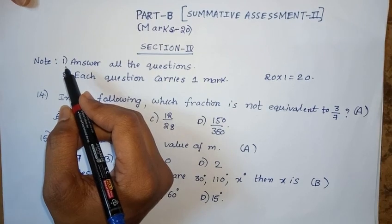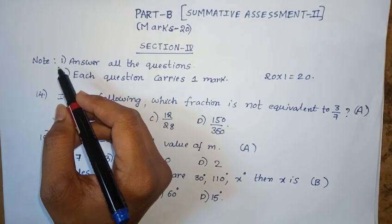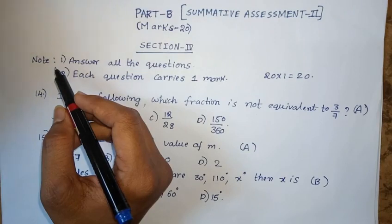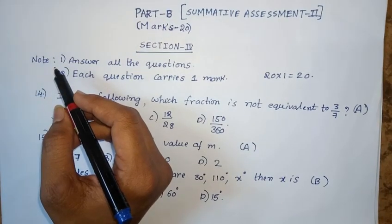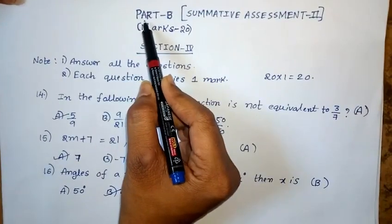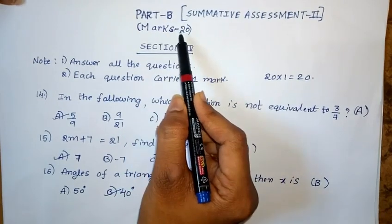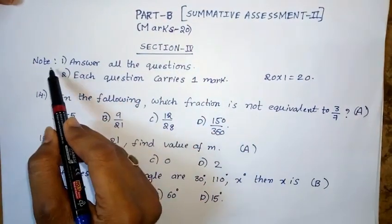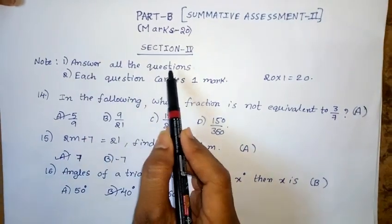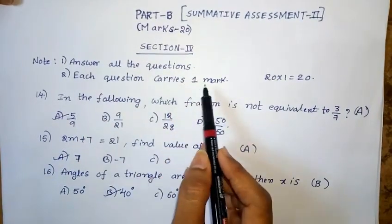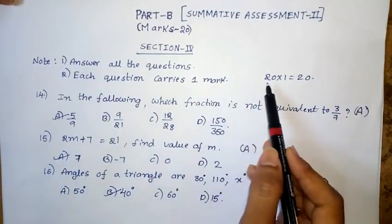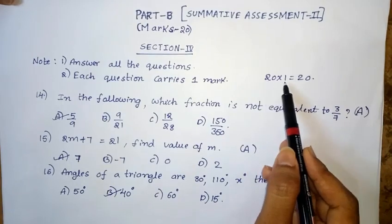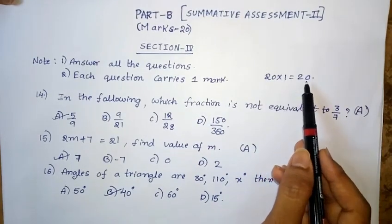Part A question paper is already explained in the previous video. I will place the part A question paper link in the description — kindly watch. Part B question paper contains maximum 20 marks. Section 4: answer all the questions. Each question carries 1 mark, so 20 questions into 1 equals 20 marks.